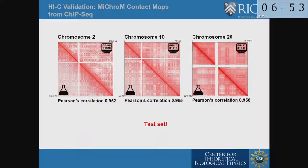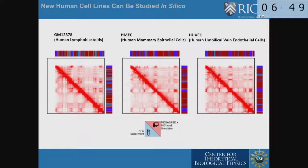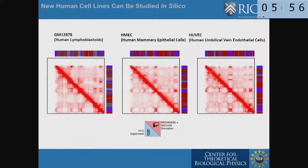In recent unpublished work, we're showing that the same Hamiltonian learned from one chromosome in a lymphoblastoid cell can be applied to other cell types — mammary epithelial cells and endothelial cells. We have a method that can predict those as well. This makes us very happy because now we can make predictions. We work on protein folding where we understand the physics well but can't always predict structures. Chromosomes are the opposite — we understand little of the physics, but we can predict structures quite well.